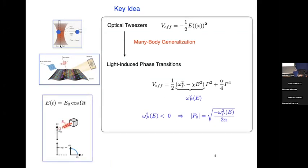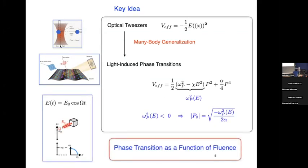In our case, the electric field is actually a function of time. We are driving a high-frequency optical phonon, and that leads to this term — and we can get the phase transition as a function of fluence, as field intensity.